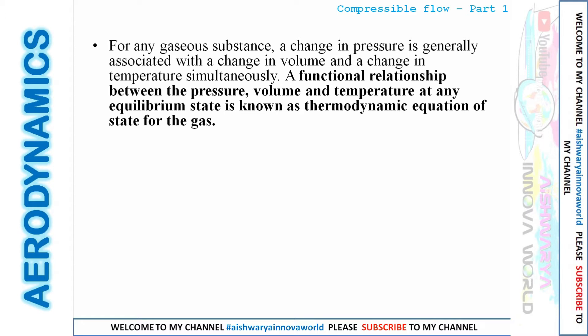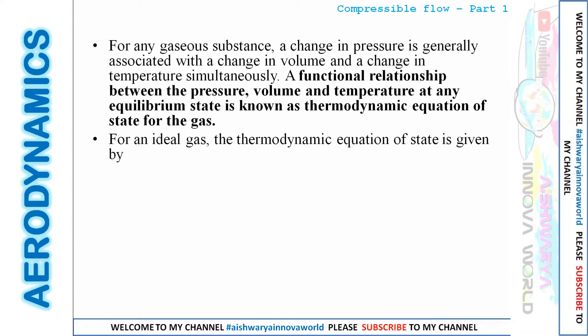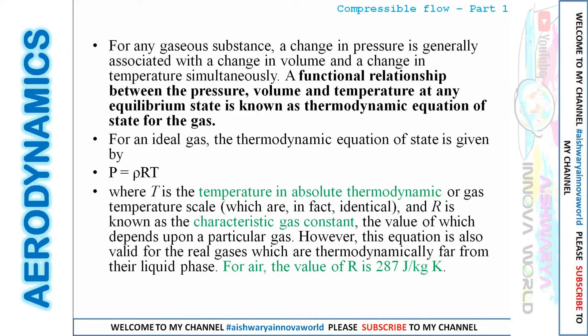For an ideal gas, the thermodynamic equation of state is P = ρRT, where T is the absolute temperature and R is the characteristic gas constant. For air, you must remember that the R value is 287 joules per kilogram-kelvin.